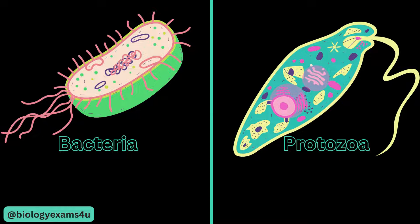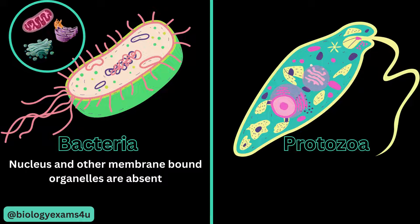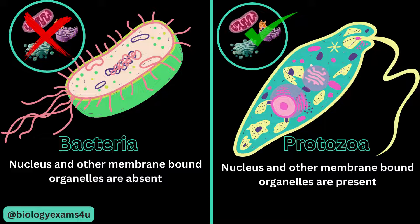Difference number two: in the case of bacteria, the nucleus and other membrane-bound organelles are absent. Organelles like endoplasmic reticulum, Golgi bodies, mitochondria, etc. are absent in bacteria. Whereas in protozoa it is a typical eukaryotic cell having all the membrane-bound organelles like ER, Golgi apparatus, mitochondria, etc.